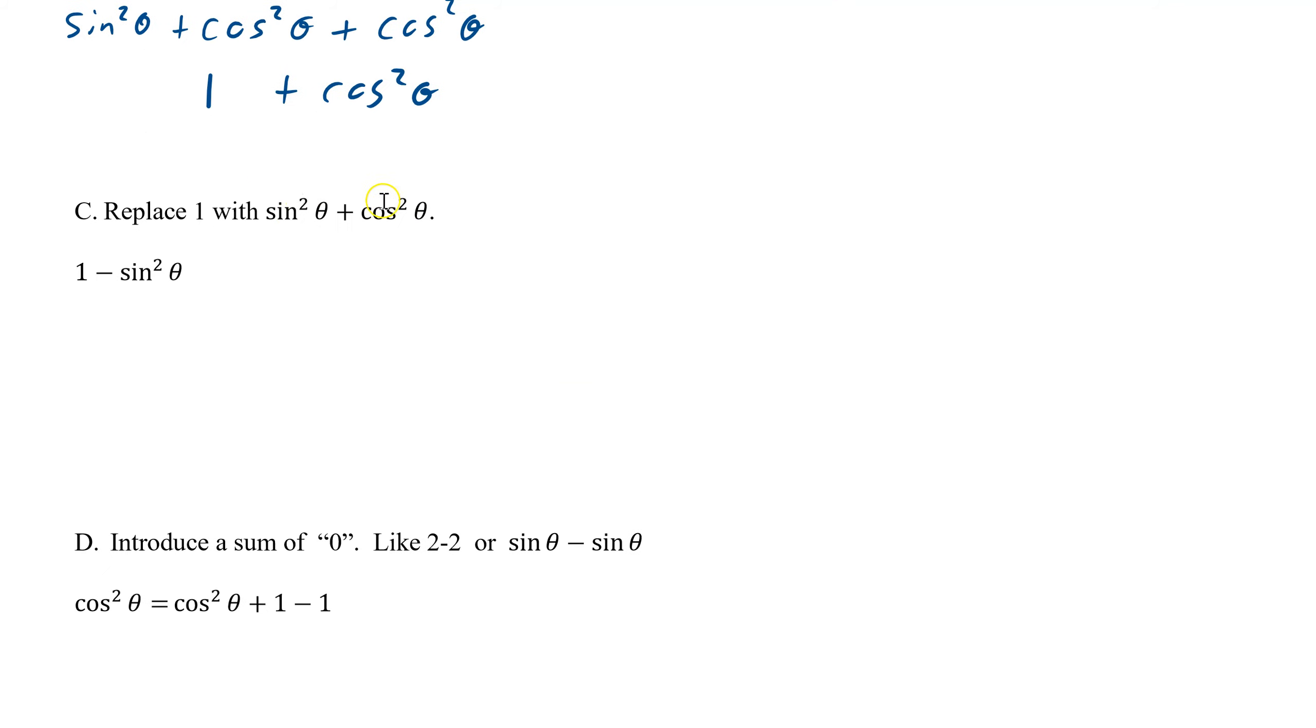We also now know that sine squared and cosine squared is 1. So if you see 1, that means you can actually replace it with sine squared plus cosine squared theta. You can take your 1 and replace it with this. You can work in reverse in any order.